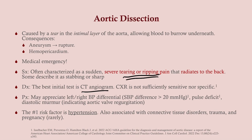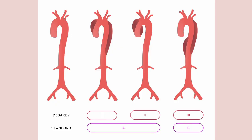The number one risk factor for aortic dissection is hypertension. It's also associated with connective tissue disorders — a tall, lanky patient with long fingers presenting with chest pain radiating to the back likely has Marfan syndrome with secondary aortic dissection. Other associations include trauma and pregnancy.